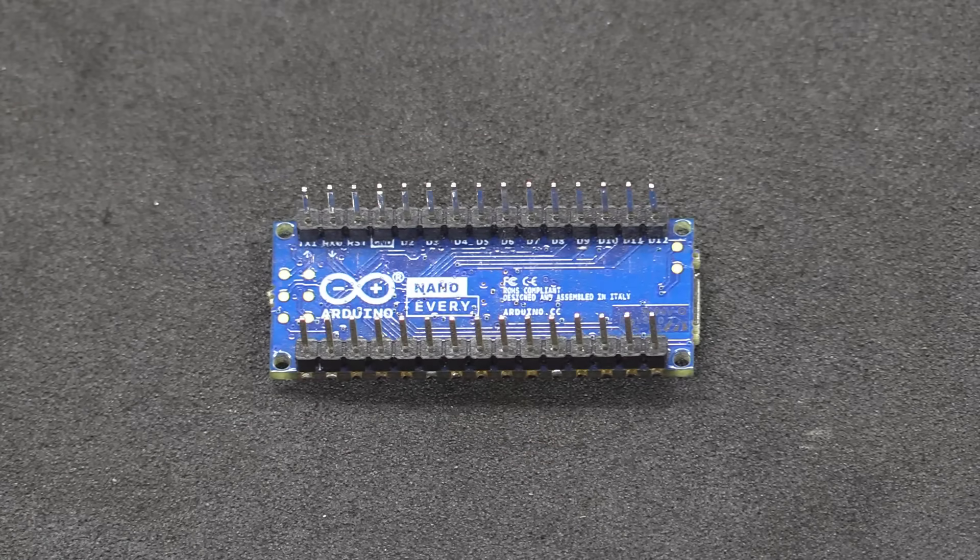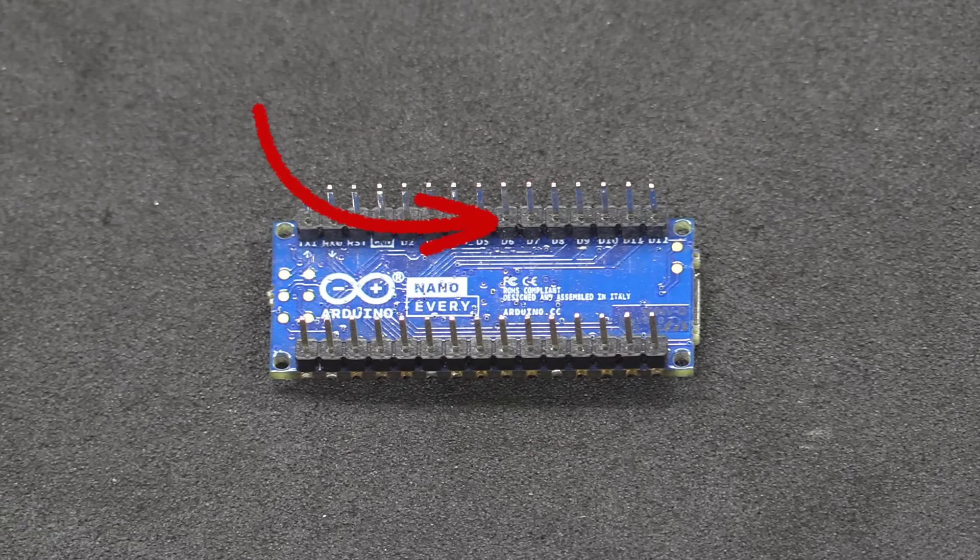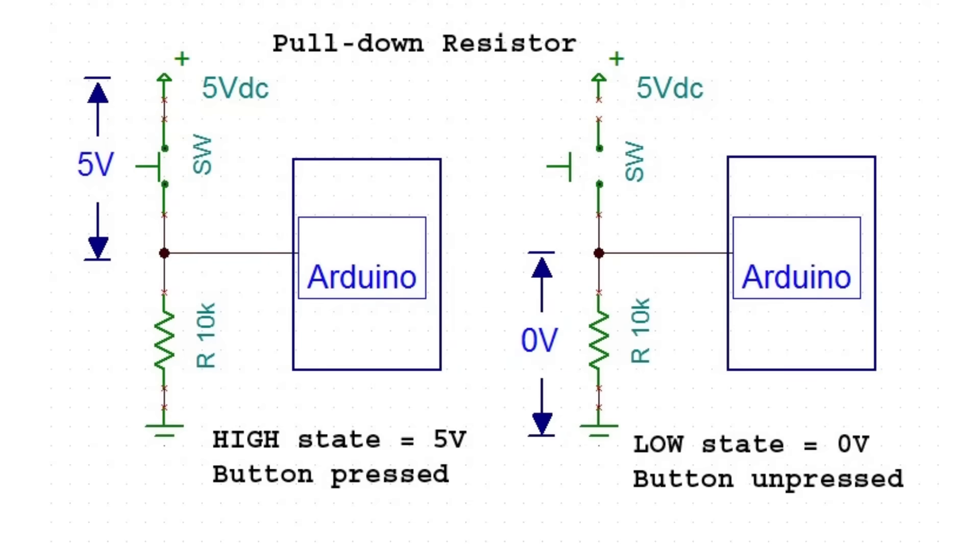Digital inputs on microprocessors do not like a floating state. They like to be either high or low. In this example, when the switch is pressed, 5V flows into the pin, and the Arduino recognises that as high.